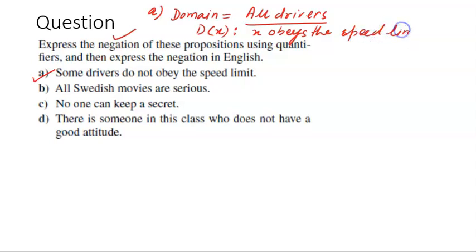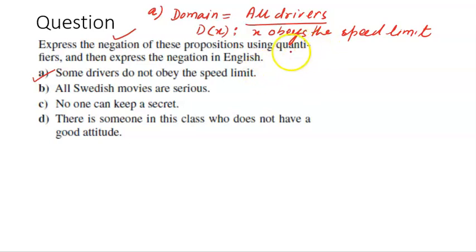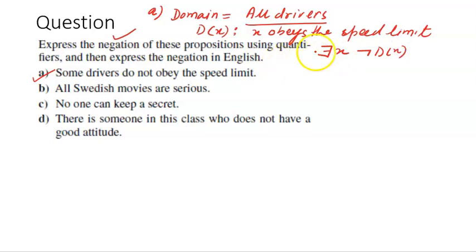Some of you may ask why I have not taken 'x does not obey speed limit' — because usually we avoid compound propositions at the start. We take D(x) and then take the negation of it. So how will this statement translate in quantifier terms? 'Some drivers do not obey the speed limits' means there exists x, negation of D(x). This is the translation into quantifiers.